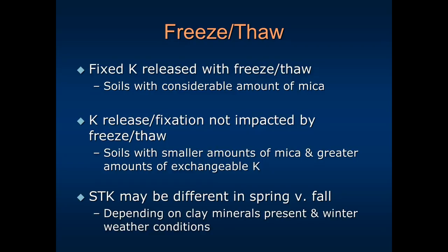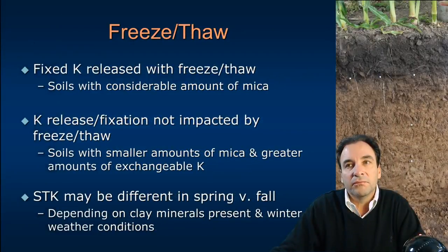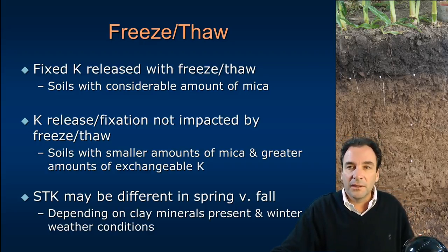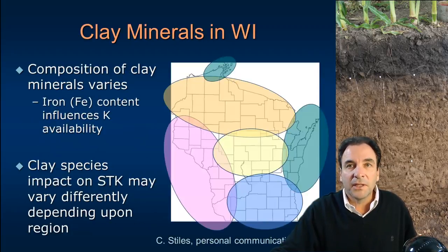Freezing and thawing or soil temperatures can impact the amount of potassium released by soils, depending on clay mineralogy. Soils containing considerable amounts of micas can release potassium as a function of freeze-thaw cycles, which influences the strength of the layers holding the soil potassium. Other soil types with smaller amounts of mica and greater amounts of exchangeable potassium are not so affected. So time of soil sampling influences nutrient levels for potassium, and with repeated sampling of a given field, it's important to sample at the same time of year from cycle to cycle.